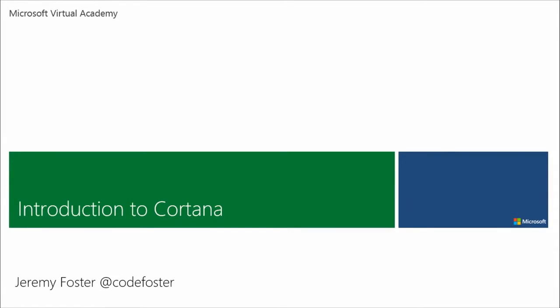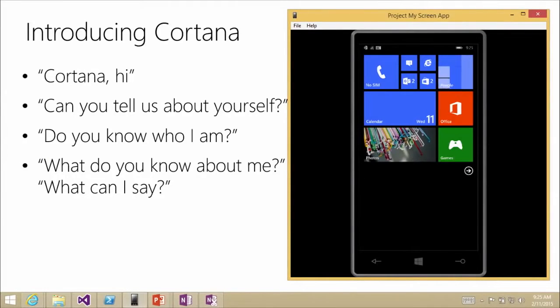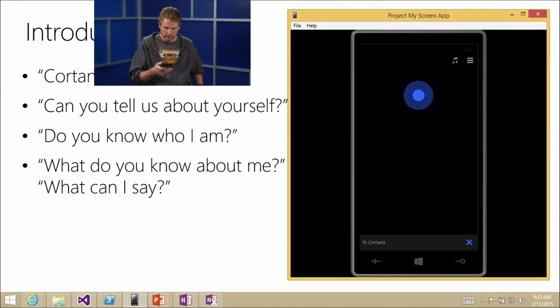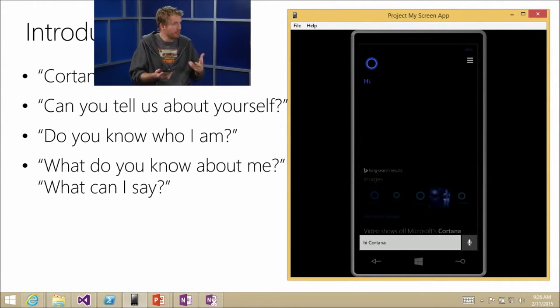I've introduced you to speech, and the next five modules will go into depth. Now I'm going to introduce you to Cortana herself — actually, let me let Cortana introduce herself. I've got my Windows phone here. I've got Cortana on this phone, and she knows about me. So, hi Cortana. Hi. Cortana knows how to greet — any AI system needs to be able to say hi.